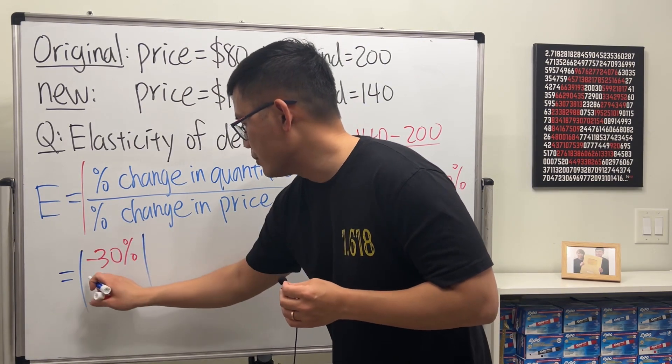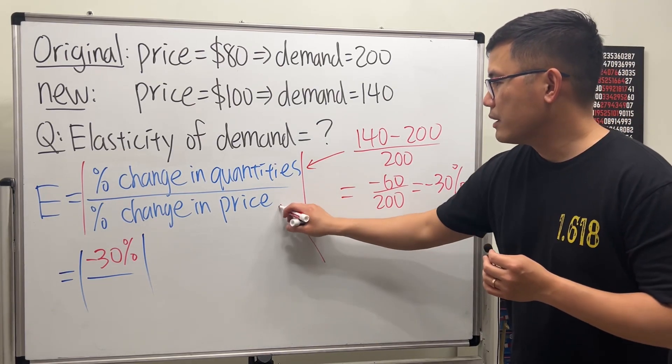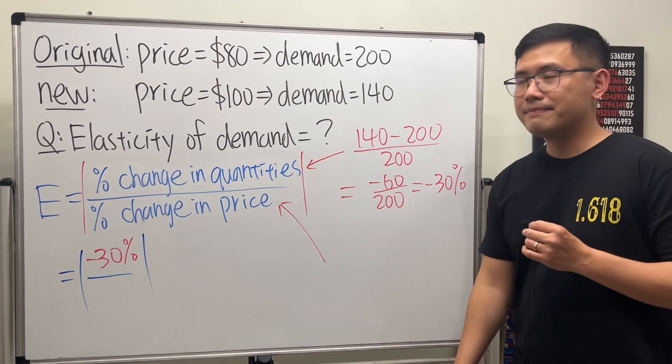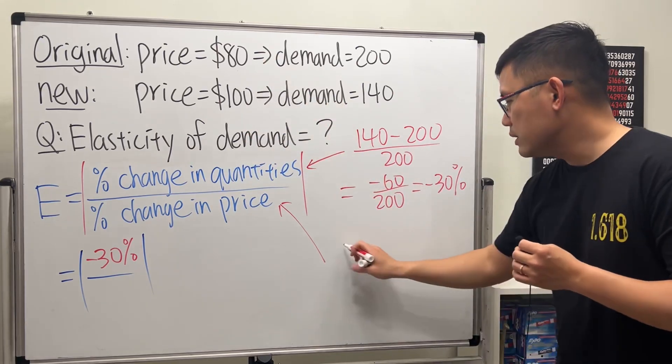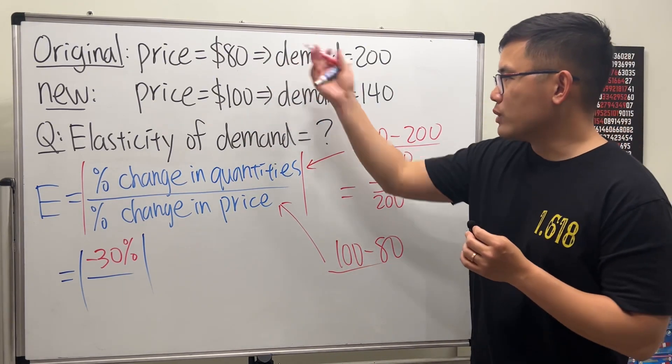Technically it was negative but I'll put it up for you. And then right here for the bottom, the percentage change in price, again we do the new minus the old, divided by the old, which is 80.